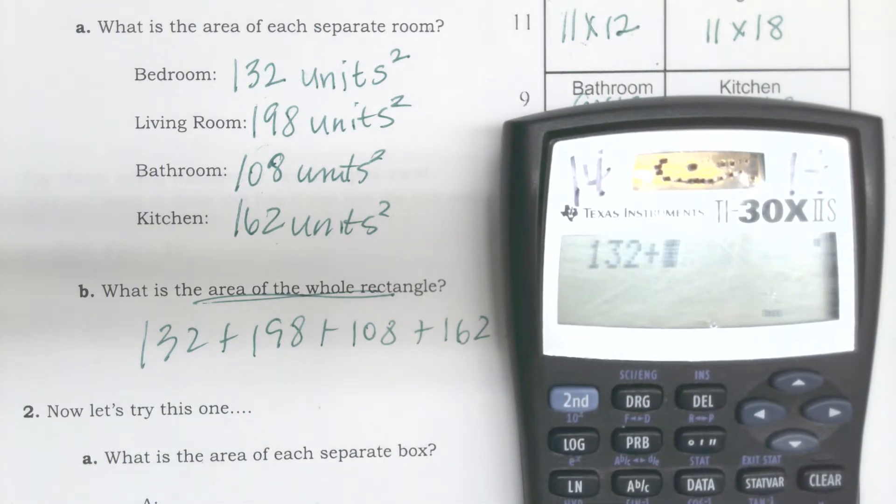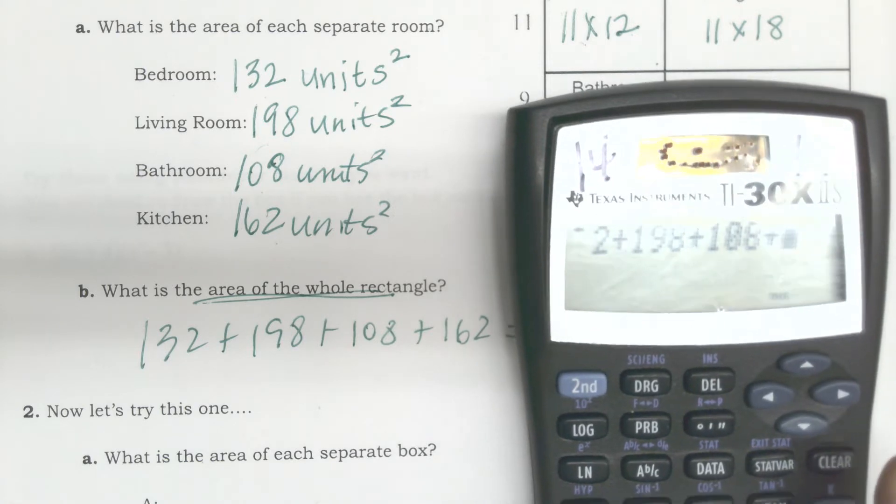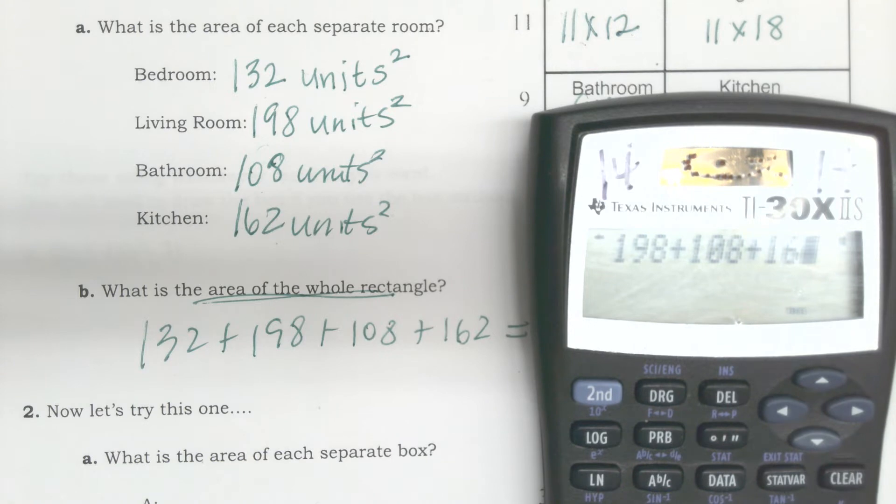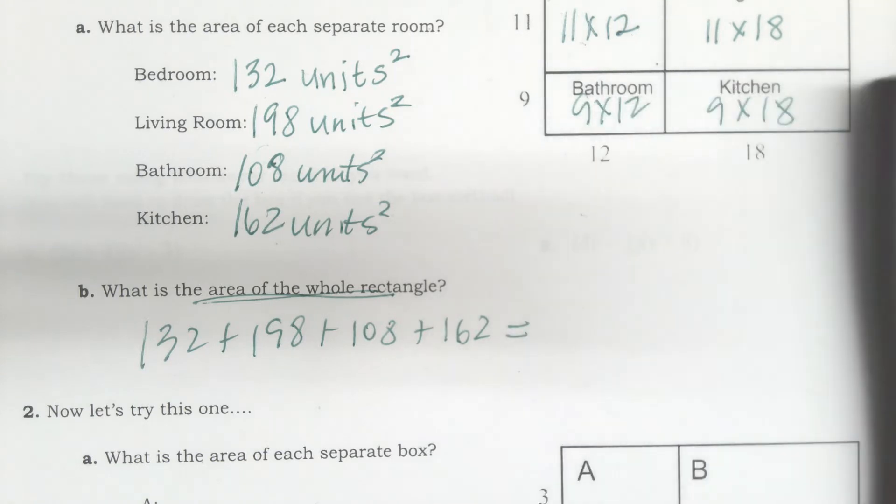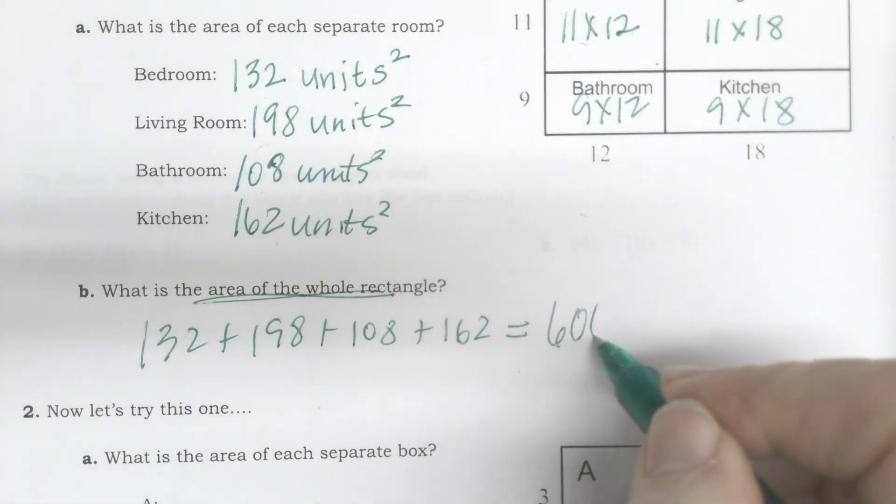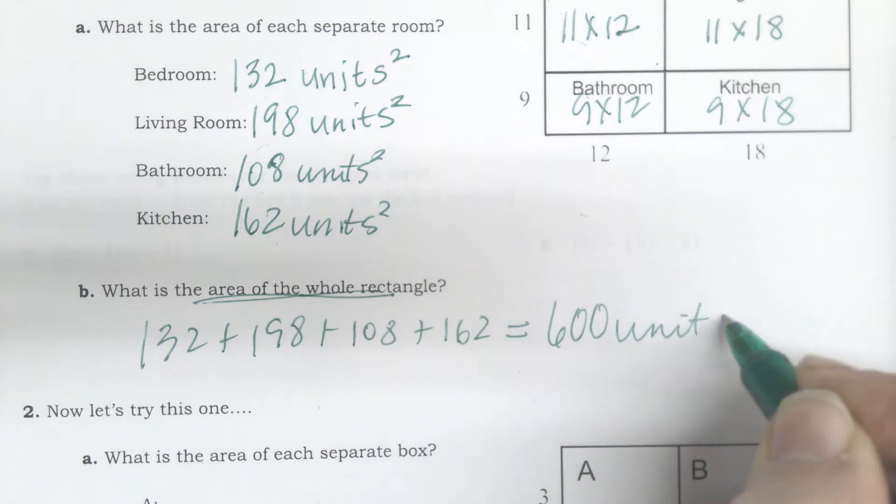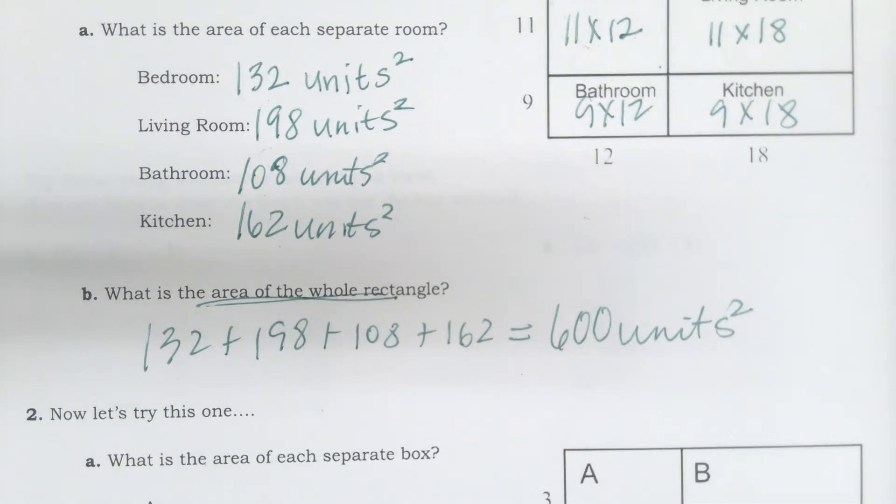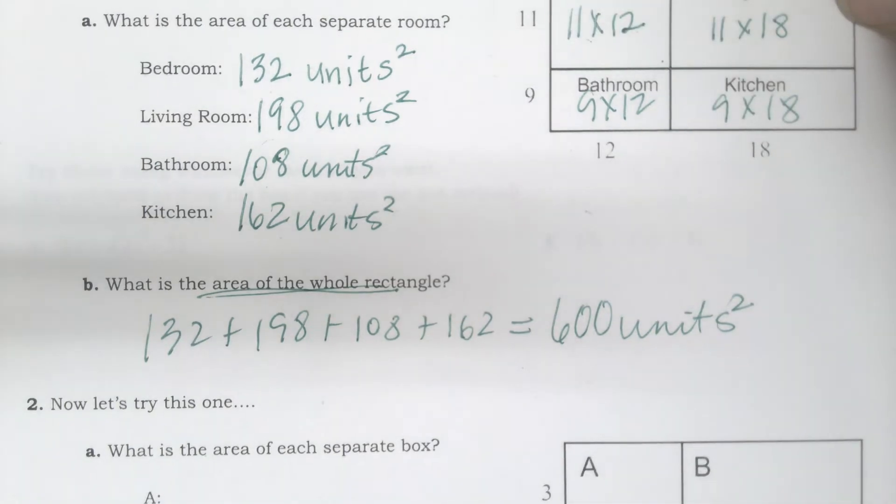This would be 132 plus 198 plus 108 plus 162, and I would get my total area of the whole rectangle by adding together the little pieces. I have it here with numbers, but we're going to make a connection with algebra. So this equals 600 units squared total.